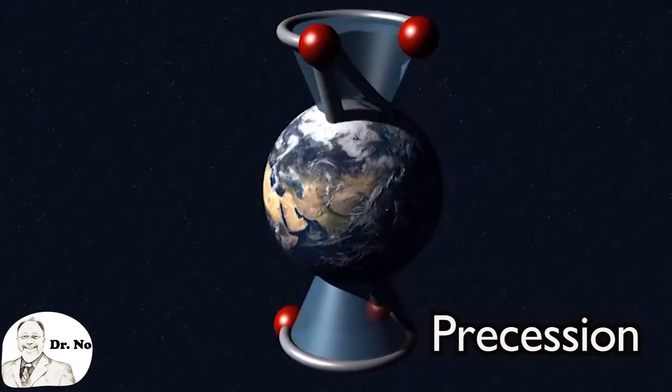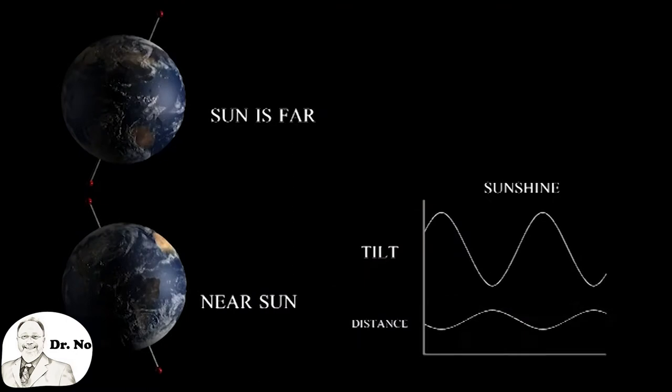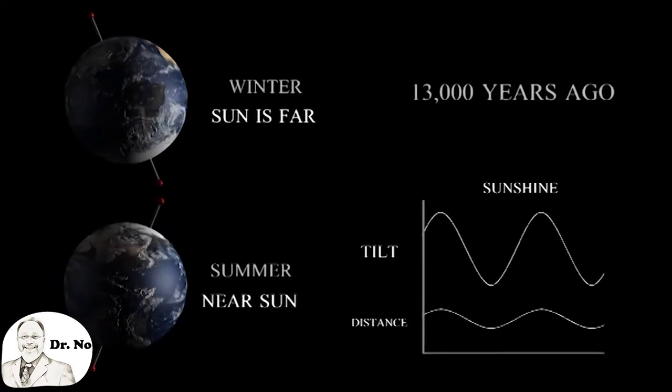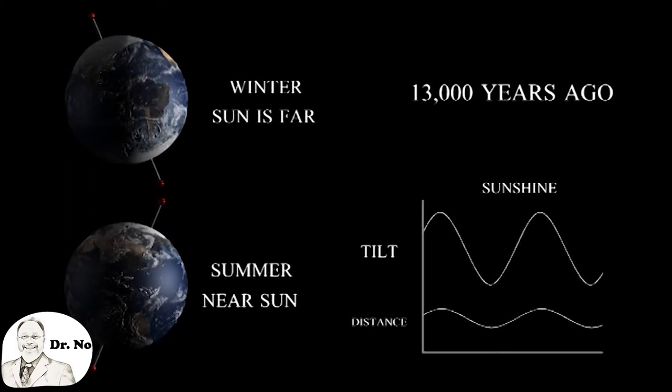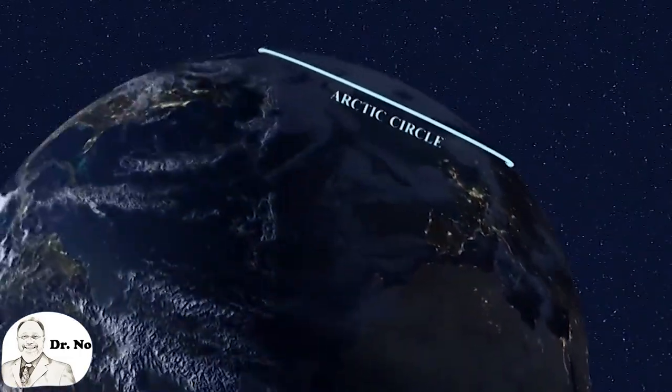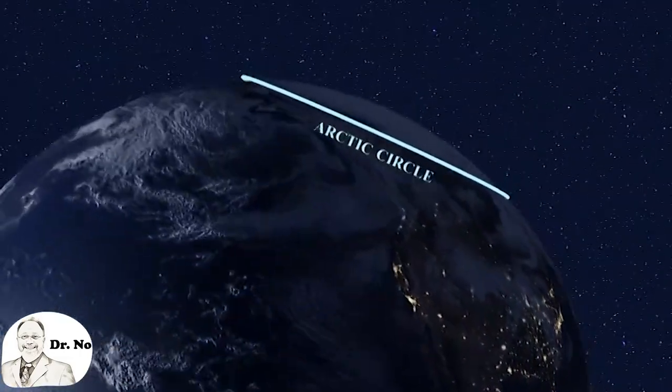Precession, as well as tilting, are the reasons why regions near and at the poles experience very long nights and very long days at certain times of the year. For example, in Norway, the Sun never completely descends beneath the horizon between late May to late July.